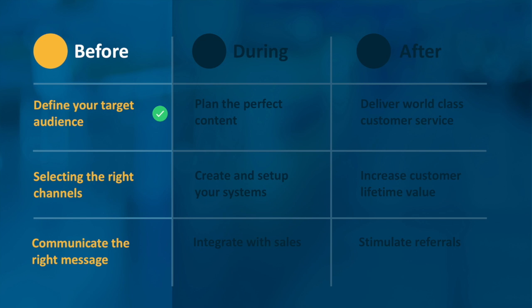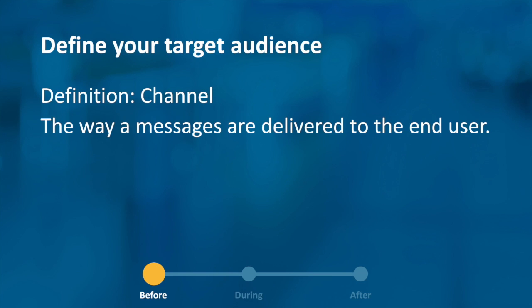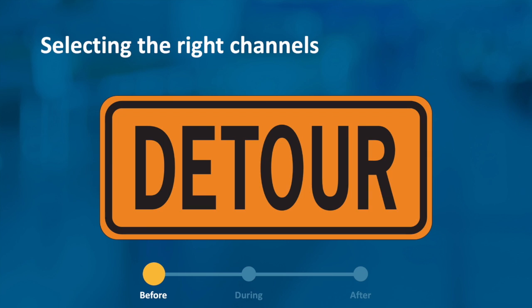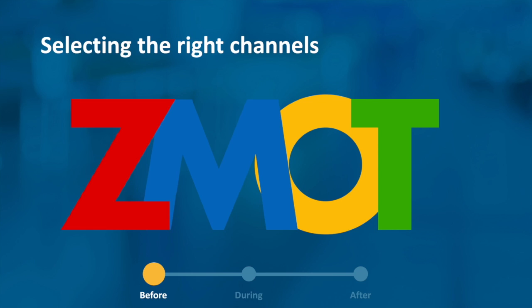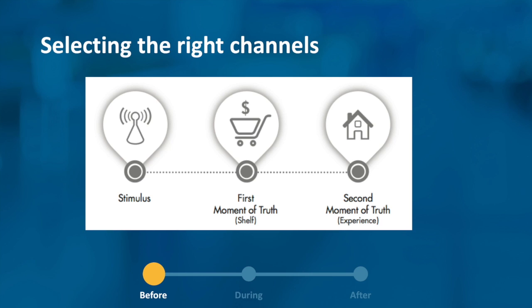Now that we've written down the personas, the next thing is selecting the right channels. A channel is the way in which your message is actually delivered to your end customer. Before we jump into this, I want to take a detour to talk about some recent research done by Google called the ZMOT — the Zero Moment of Truth. This research was done to challenge the typical marketing model where stimulus drives a customer to their first moment of truth — the point of contact with your product.